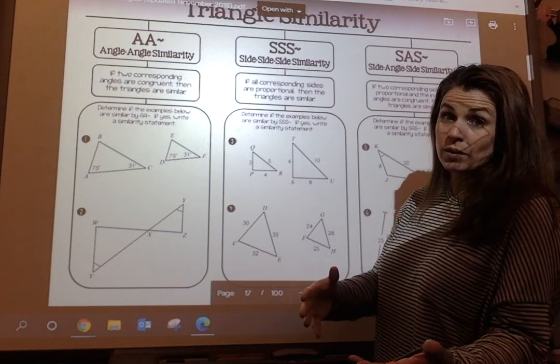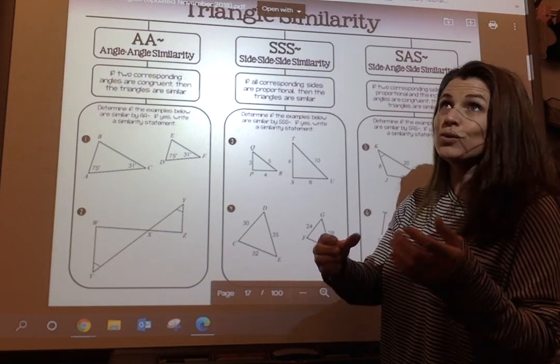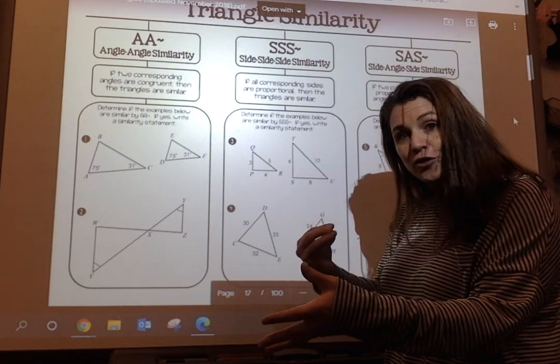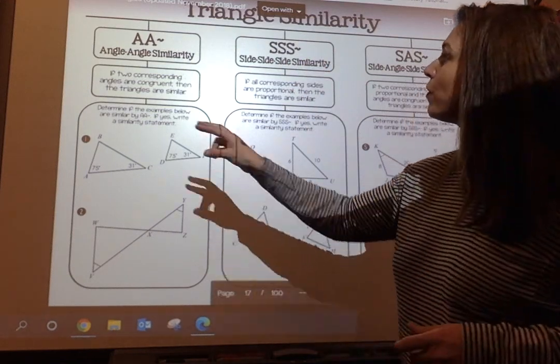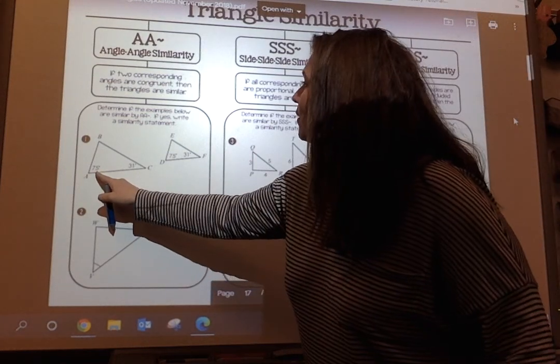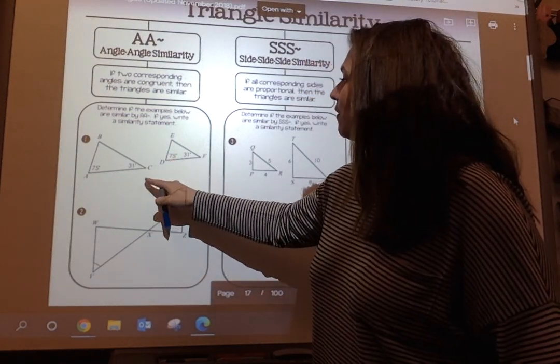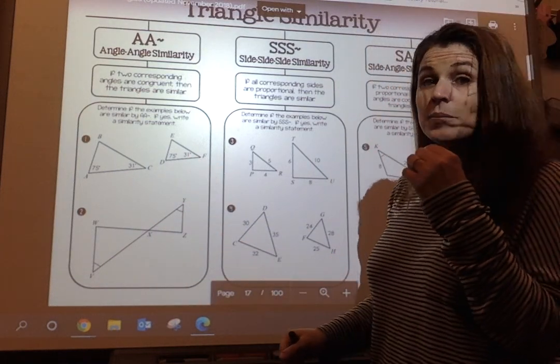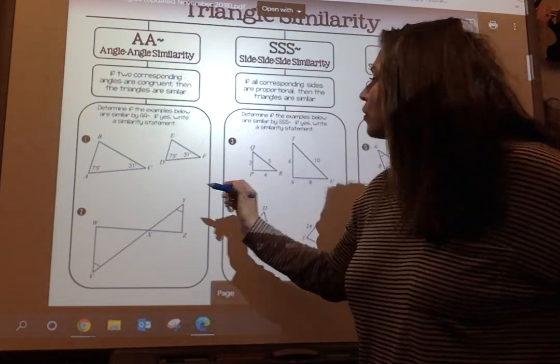So angle-angle means that if two corresponding angles of one triangle are corresponding to the other triangle, then we know that those two triangles are congruent. So let's take a look. If this angle's 75 and D is 75, C is 31 degrees and F is 31 degrees, are they similar? Yes, because those two angles are congruent.